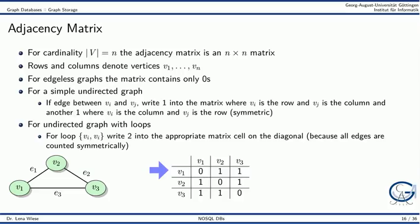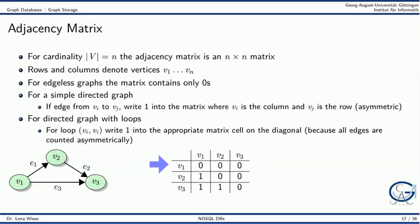We can also represent loops — that is, edges on one node. In this case, we write 2 in the appropriate matrix cell on the diagonal. For a directed graph, the adjacency matrix is no longer symmetric. For example, we let the source node be represented by the column and the target node by the row. For edge E1, we set the bit where V1 is the column and V2 is the row, because V1 is the source and V2 is the target. For loops on one node, we simply write the one bit in the appropriate diagonal cell.